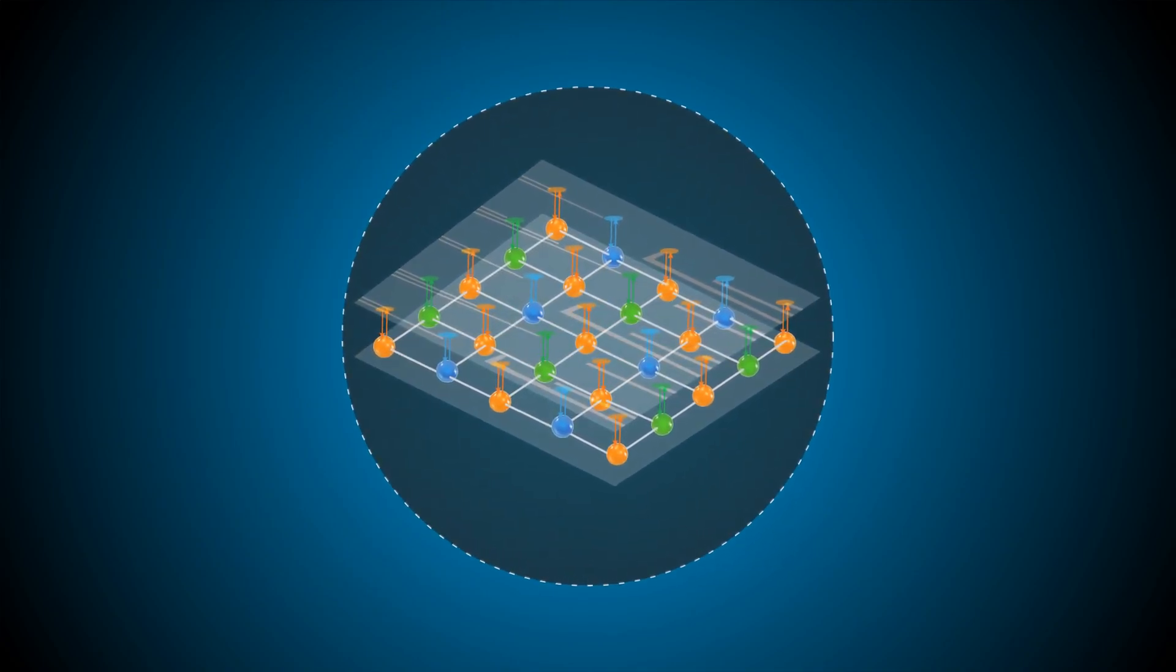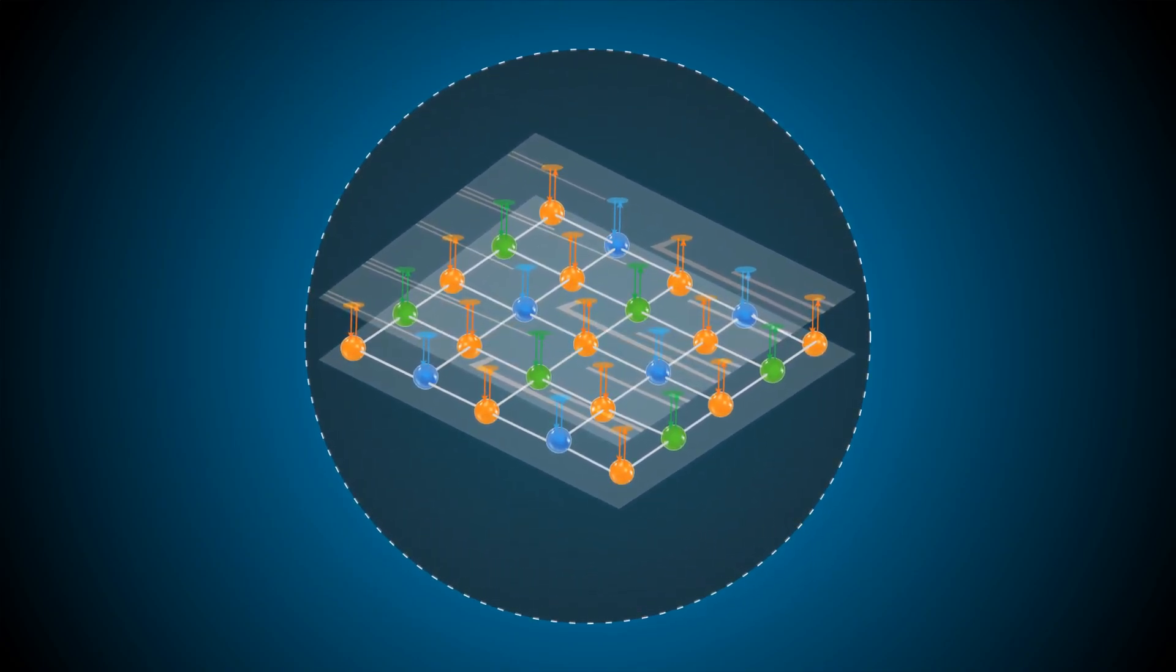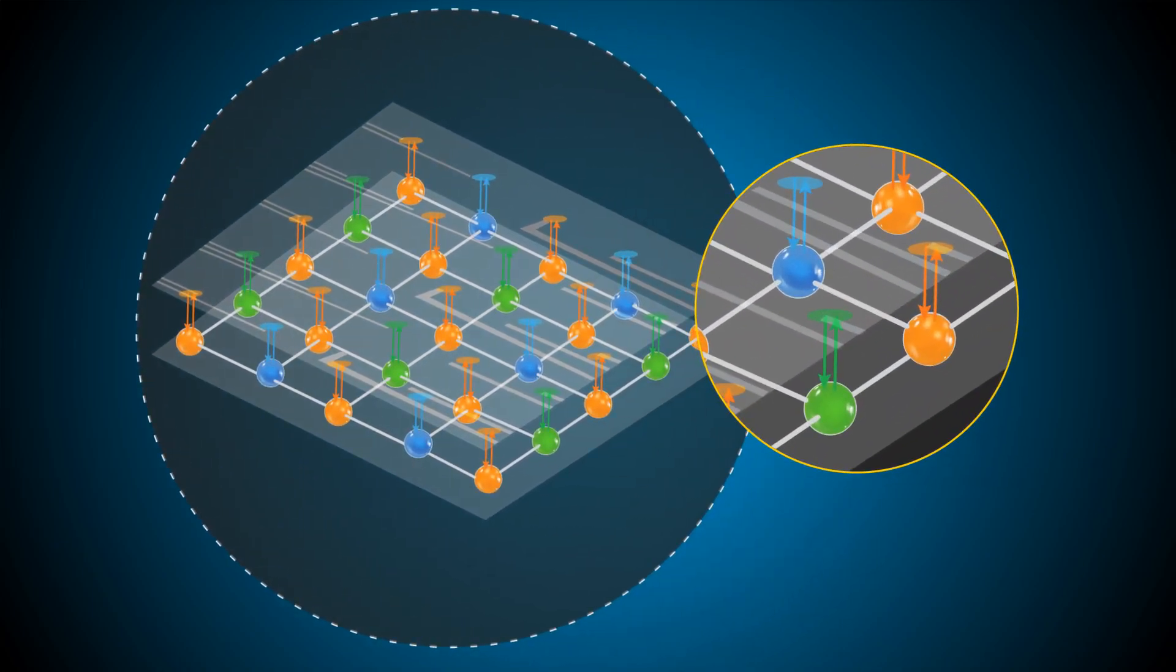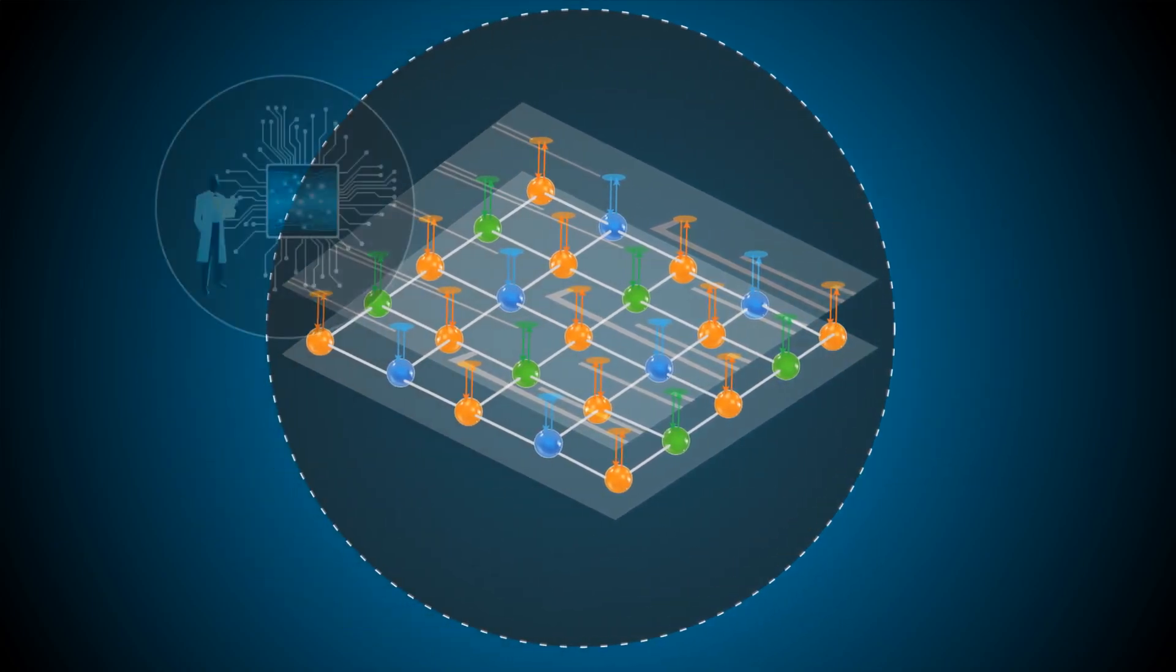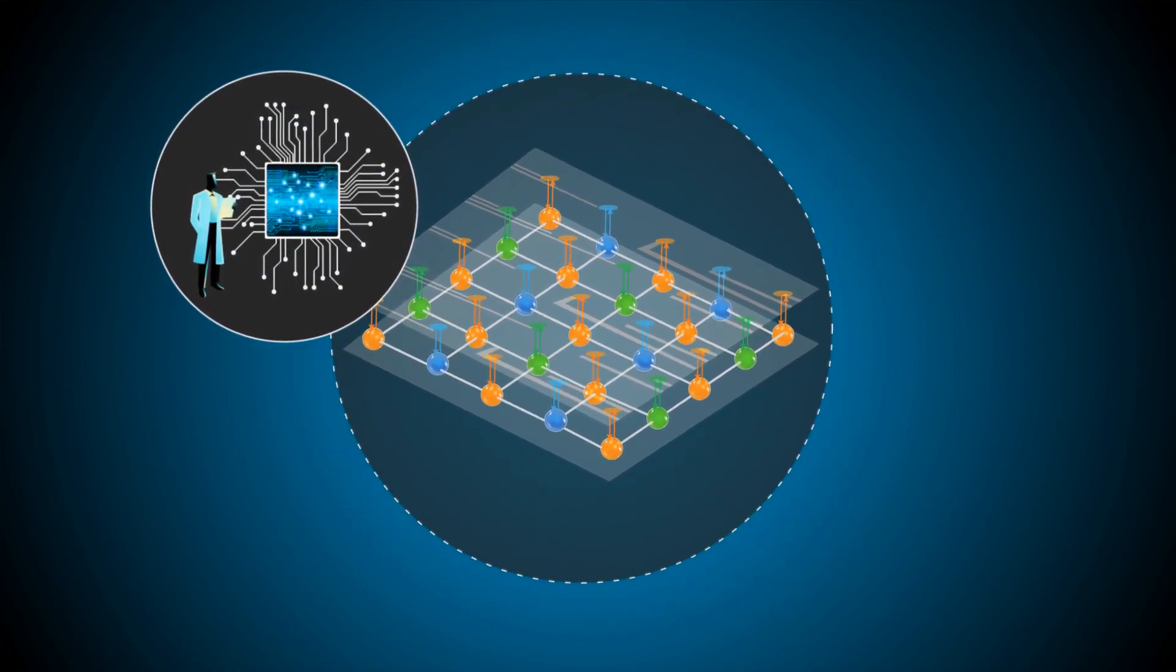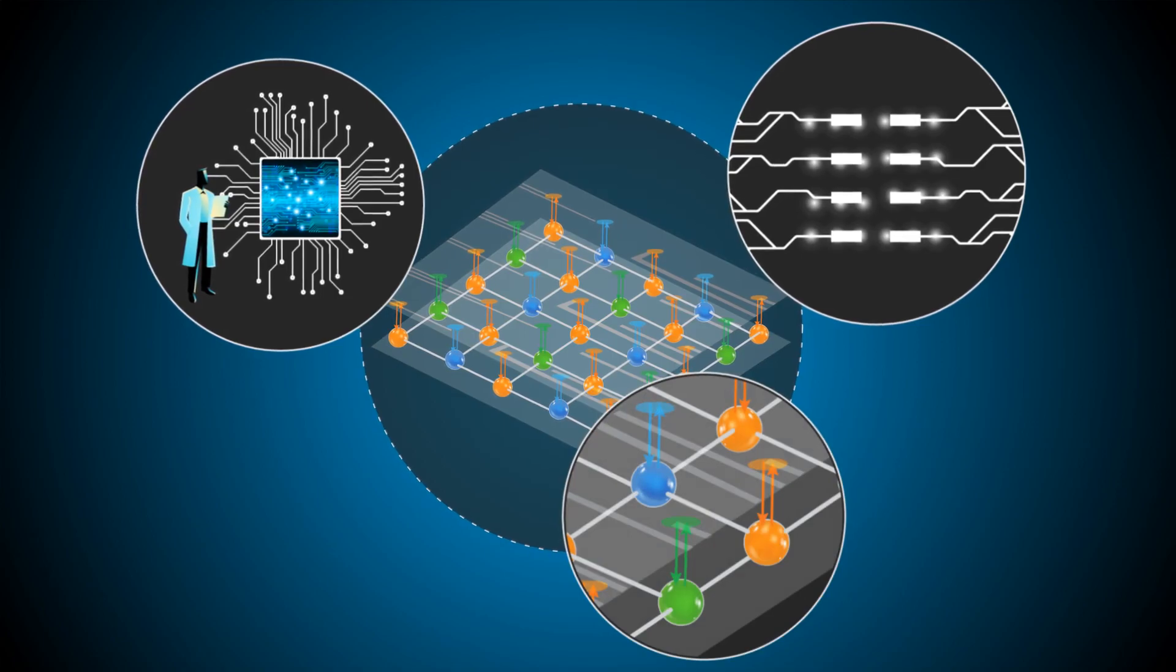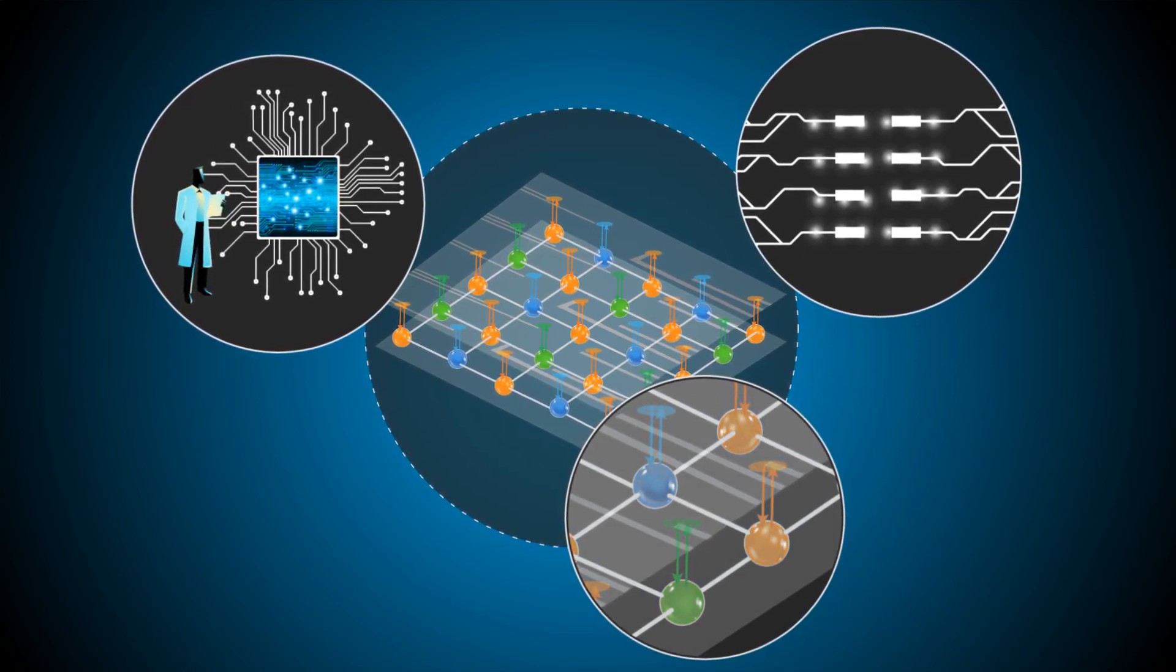To make this possible, complex and intricate 3D wiring systems have been devised, creating structures that span multiple planes. These structures are difficult to construct, involve considerable crosstalk and interference, and result in the rapid degradation of qubits.